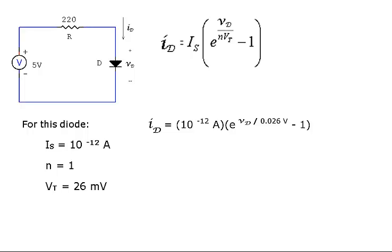For this particular diode, the saturation current is 1 picoamp, the ideality factor is 1, and the thermal voltage is 26 millivolts. But the resulting equation still has two unknown variables, the diode current and the diode voltage. Another equation is necessary.